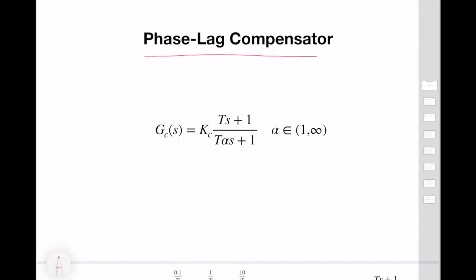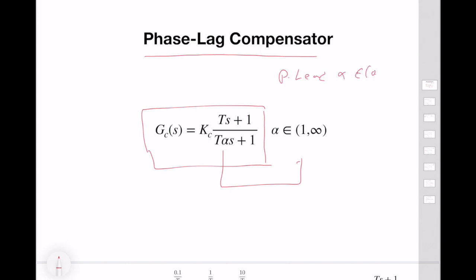The phase lag compensator has exactly the same structure as the phase lead compensator. The only difference is that alpha is in a different interval. In the phase lead case, alpha was an element of (0, 1), and in this case alpha is an element of (1, infinity). So technically alpha is a real number which is greater than 1.